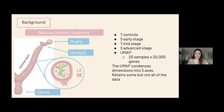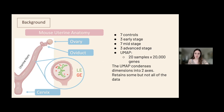Moving on to the background of my investigation: because I was looking at epithelial cells in the endometrium, tissue from the uterine horn needed to be collected. Different types of epithelial cells such as luminal epithelial and glandular epithelial cells were stained. The reason these were focused on is because they were the two cells that had PaxA mRNA. The sample size included seven controls, seven early stage, seven mid stage, and three advanced stage mice samples. The UMAP I created consisted of 20 samples by 20,000 genes.